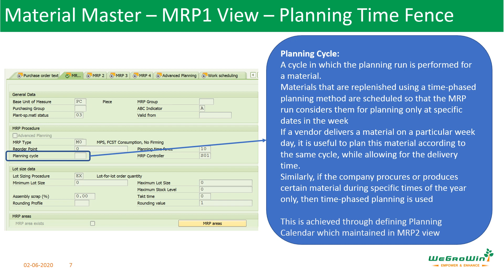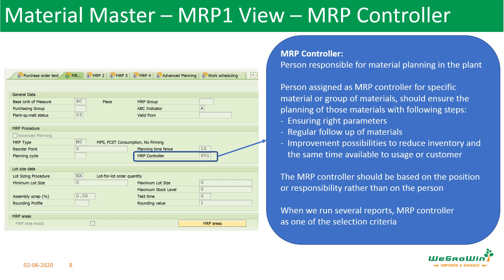Also for some businesses like food processing or fruit juice companies, they can procure certain materials only in specific seasons. The period when that season occurs can be defined, and the planning cycle can be entered there — so the system will propose procurement proposals accordingly. The MRP controller is the person responsible for the material planned in the plant. The MRP controller should ensure the right parameters for the material, do regular follow-up, and work on improvement possibilities to reduce inventory and save time.